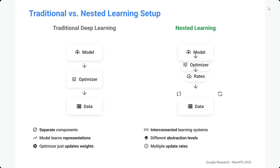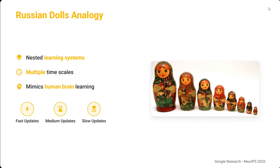In the traditional setup, the model trains on optimizer and data. In nested learning, the model, optimizer, and weights are nested within each other — these are interconnected learning systems at different abstraction levels with multiple update rates. Within the model, different layers learn different things: the early layers might be faster at learning, the middle ones slower, and so on. Nested learning targets this and trains the model not in one go but in multiple steps.